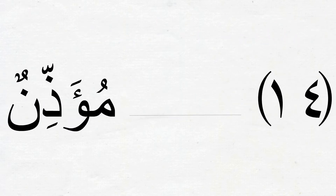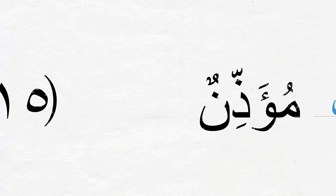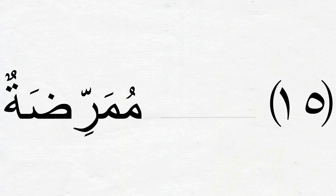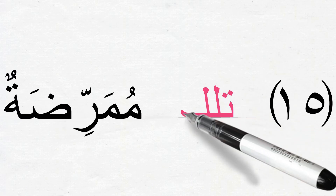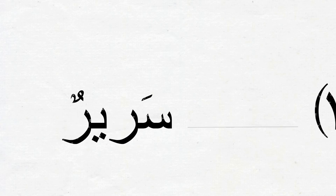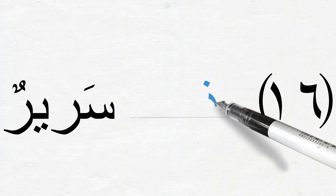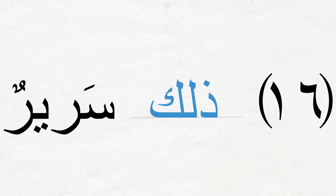Number 14: مُؤَذِّنٌ — we should write ذَٰلِكَ مُؤَذِّنٌ, that is a muezzin. Number 15: مُمَرِّضَةٌ means 'a female nurse', so we will write تِلْكَ مُمَرِّضَةٌ — that is a female nurse. Number 16: سَرِيرٌ means 'a bed', a مُذَكَّر اسم, so we will use ذَٰلِكَ — ذَٰلِكَ سَرِيرٌ, that is a bed.